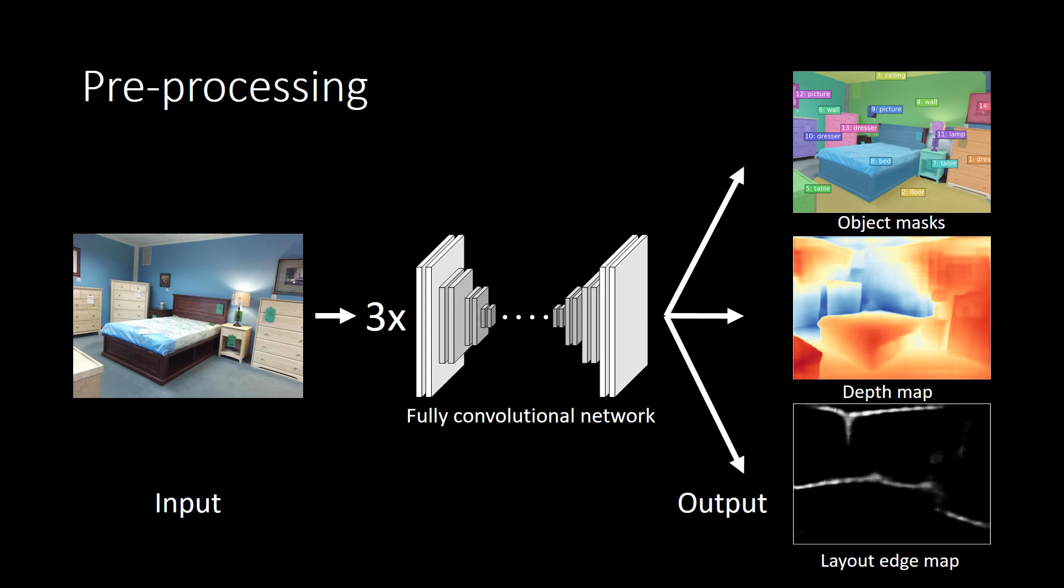With a single photograph as the input, three fully convolutional networks are used to generate object segmentation results, a depth map, and an edge map of the room layout.